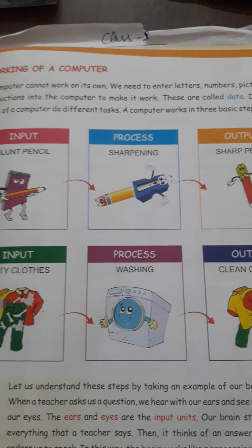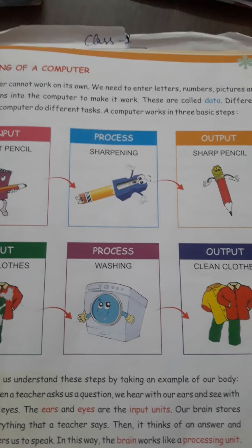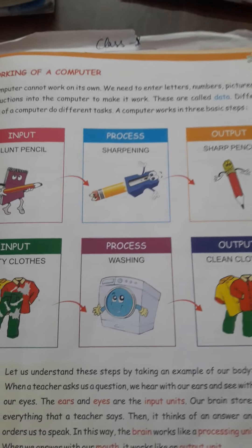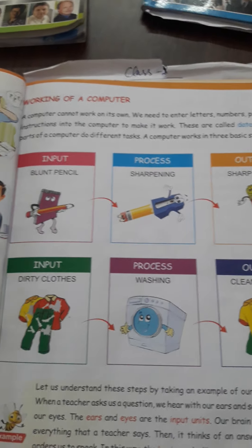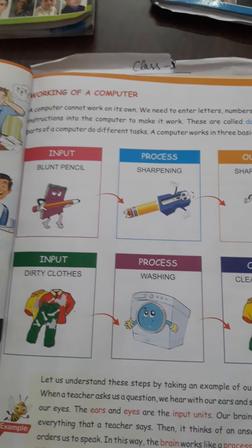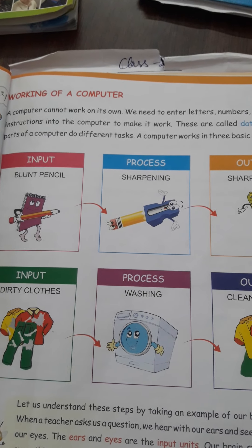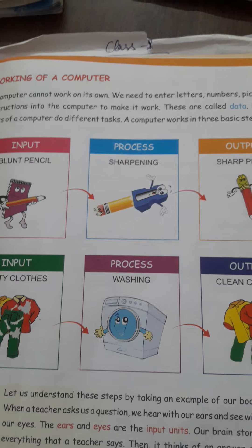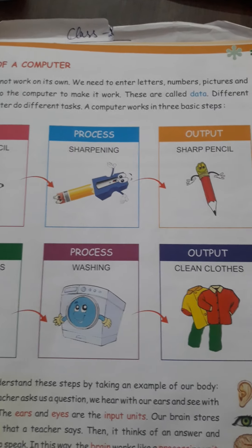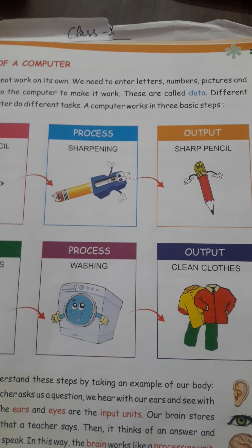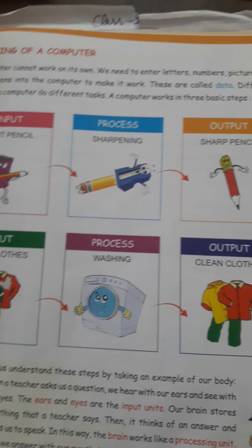दोनों examples आपके सामने हैं। Blunt pencil — आप sharpener के अंदर sharp करते हो तो finally output क्या आता है: sharp pencil। ऐसे ही dirty clothes को हम washing machine में input करते हैं तो output पे clean clothes आता है। Processor यहाँ sharpener and washing machine हैं, और final output है sharp pencil and clean clothes।